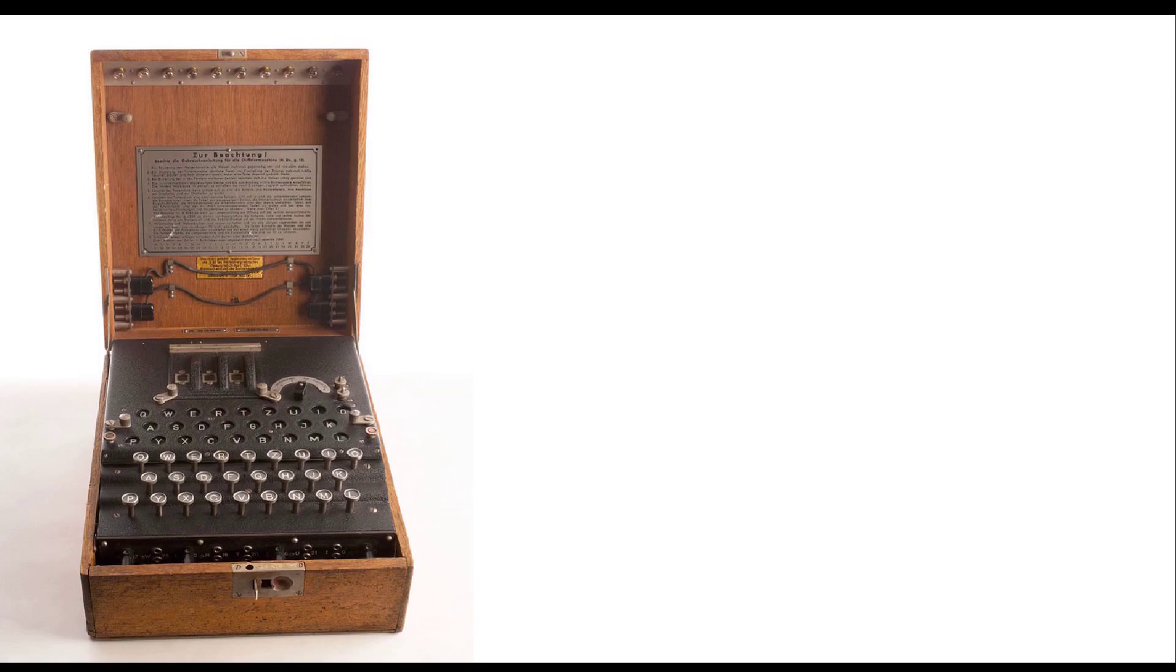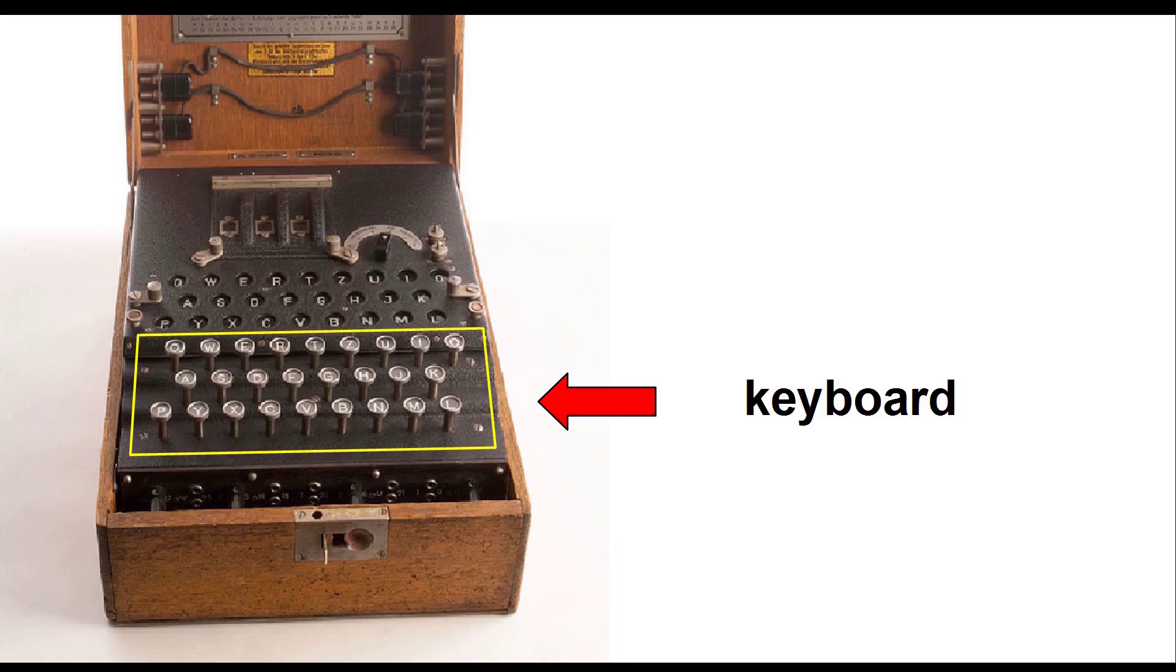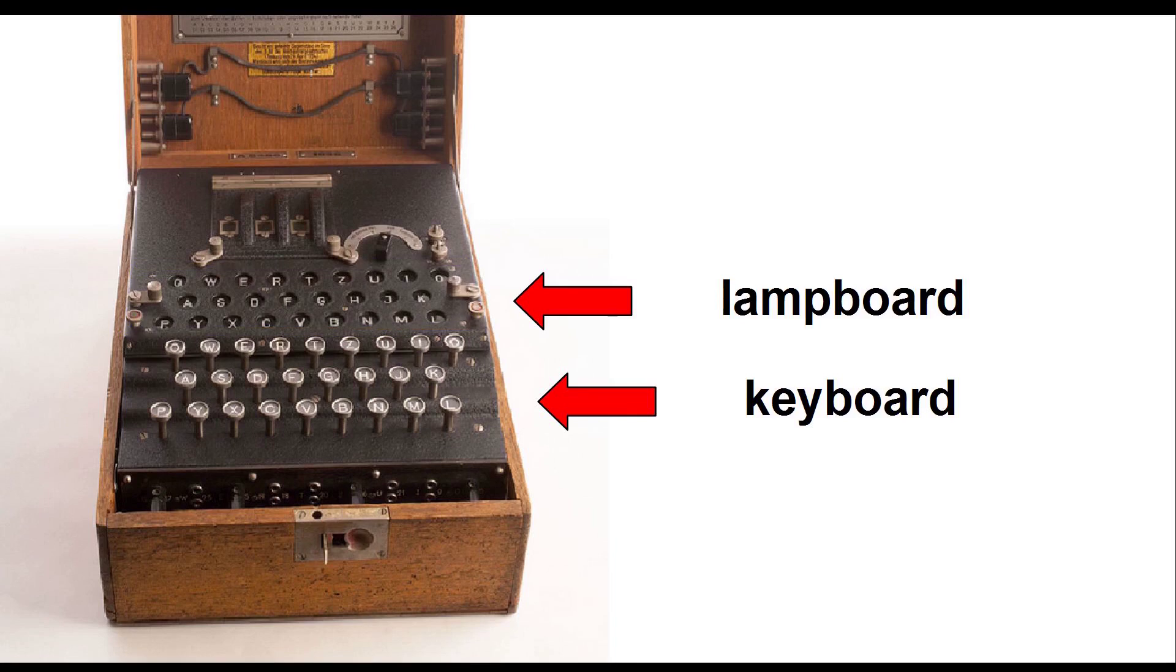The Enigma was used by the Germans during the Second World War to encrypt and decrypt messages. The machine consists of three parts: the keyboard, the lamp board, and the rotors.